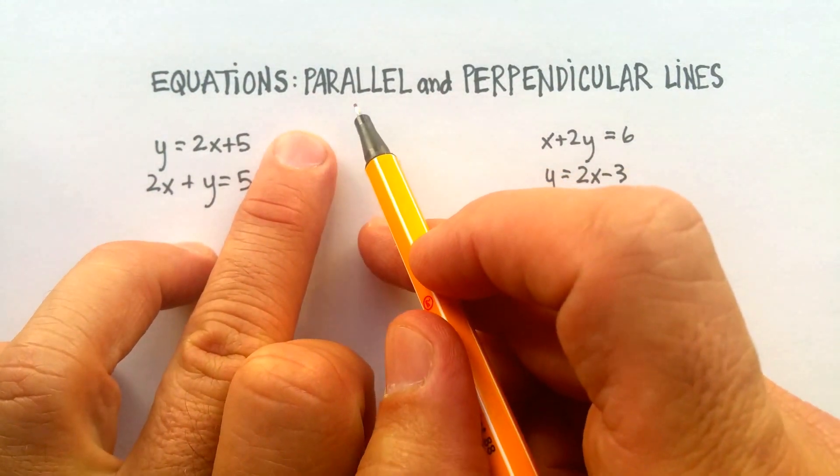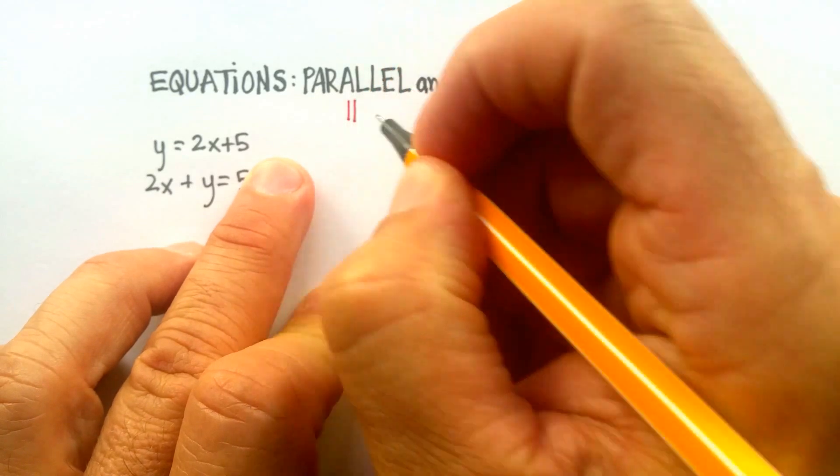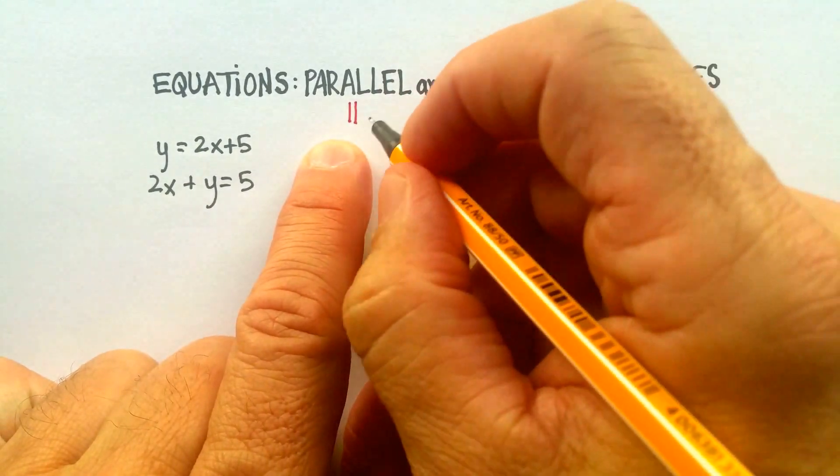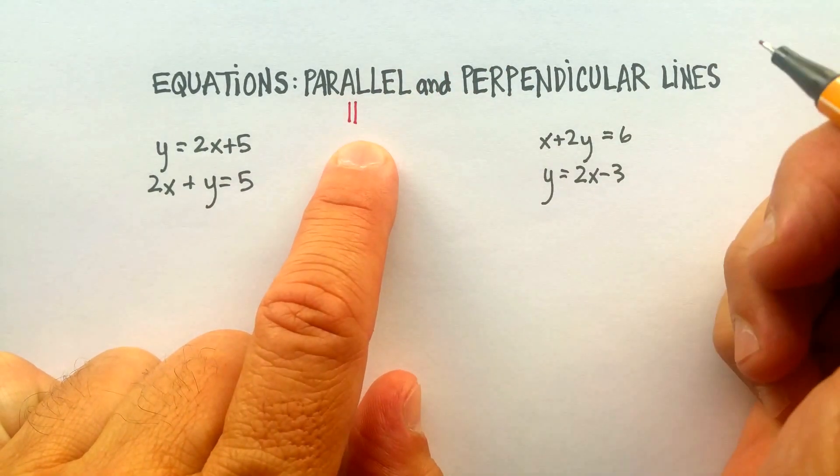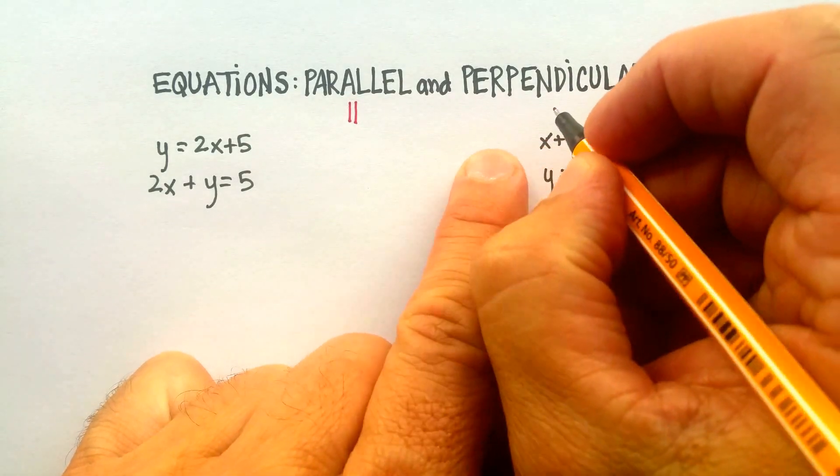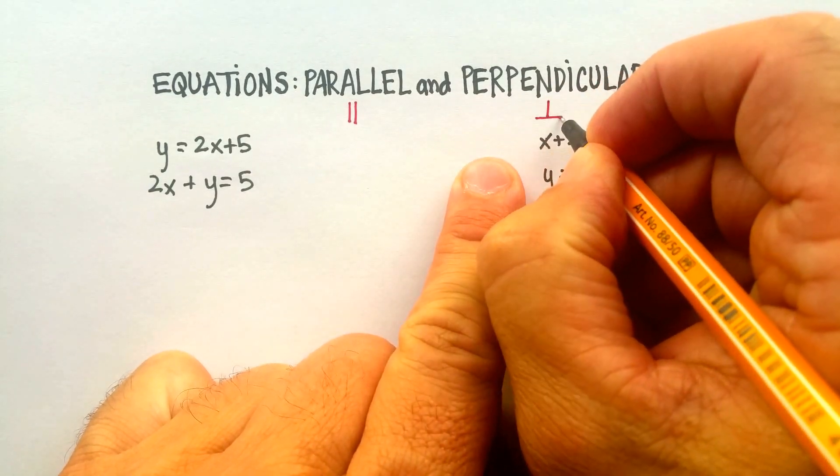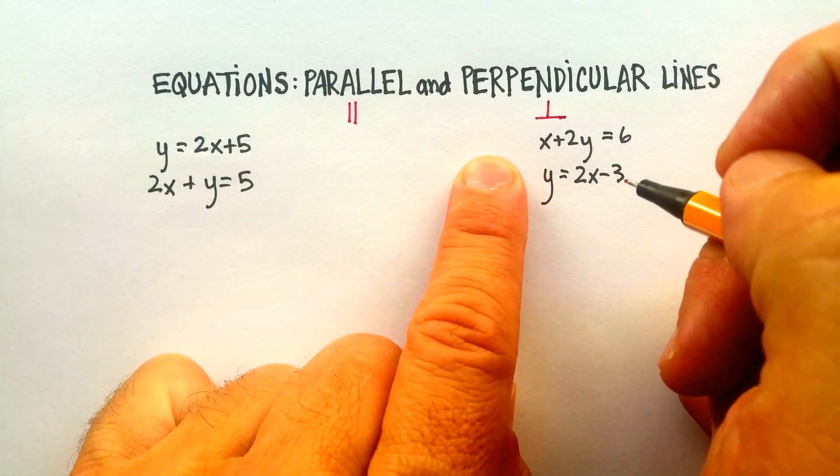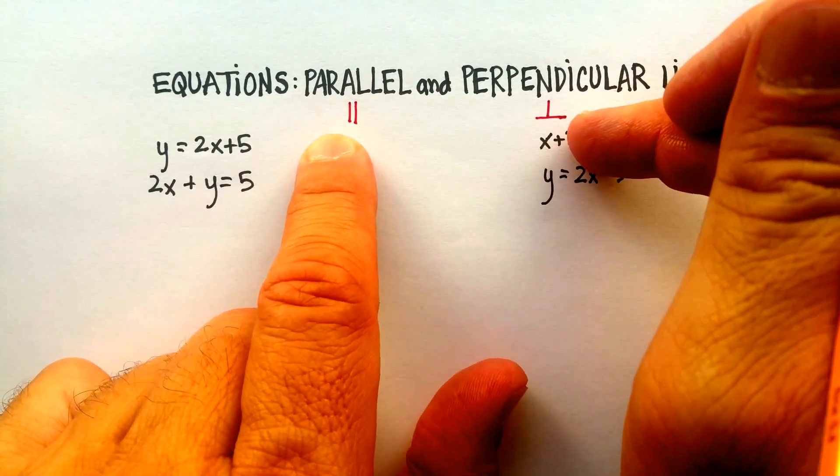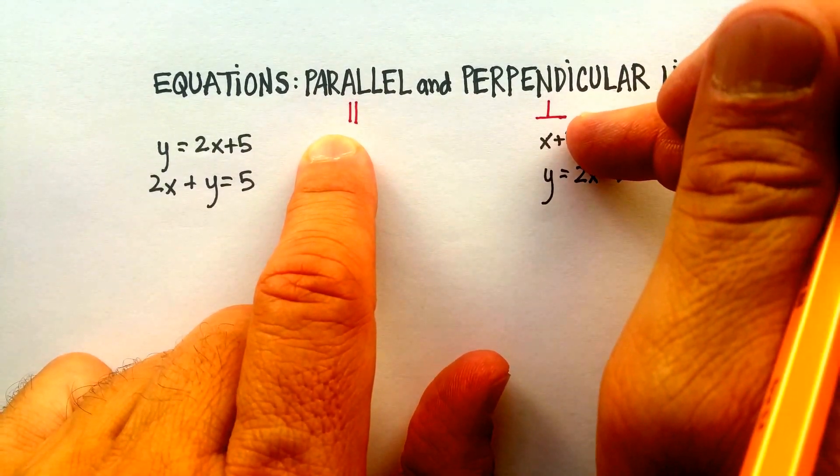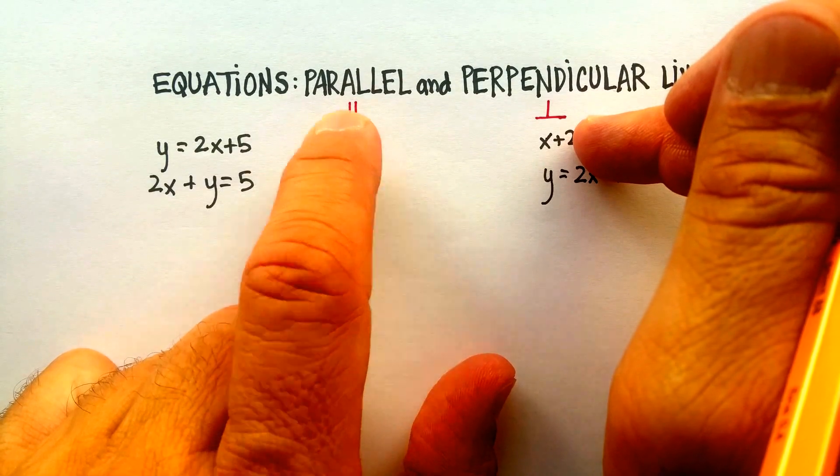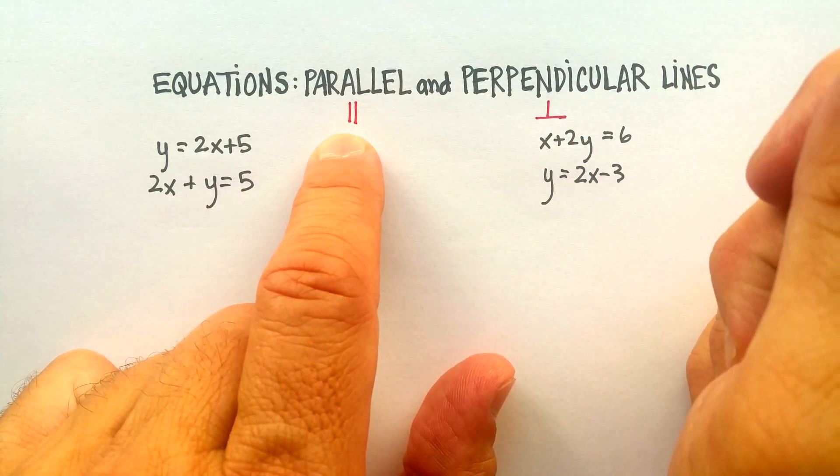The symbol for parallel lines is just this, two little lines right next to one another. Sometimes you see them in a slight tilt, but normally they're like this. The symbol for perpendicular lines is this, looks like an upside-down T. So if you see these things in your book or online, that's exactly what they mean. Parallel lines, perpendicular lines.